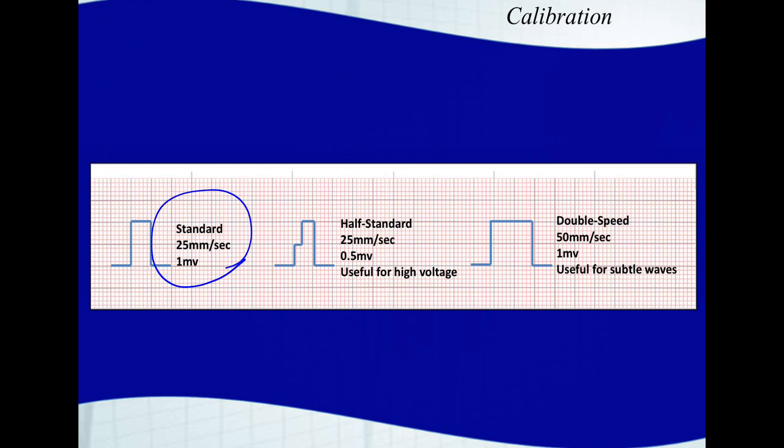If the print speed is faster, it'll create a wider calibration. A common European print speed is 50 millimeters per second, so you get this double width calibration mark. Sometimes you have a half standard calibration mark, which is often used if a patient has some sort of cardiomegaly or hypertrophy. It shows up as very large complexes, which may make it difficult to interpret, so you can calibrate the EKG to half standard.